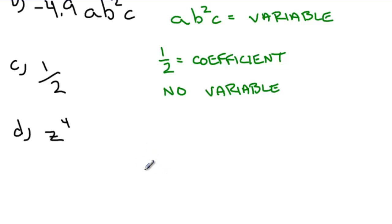And, the last part, z to the exponent 4. We'll do the variable first. z to the exponent 4 is the variable.